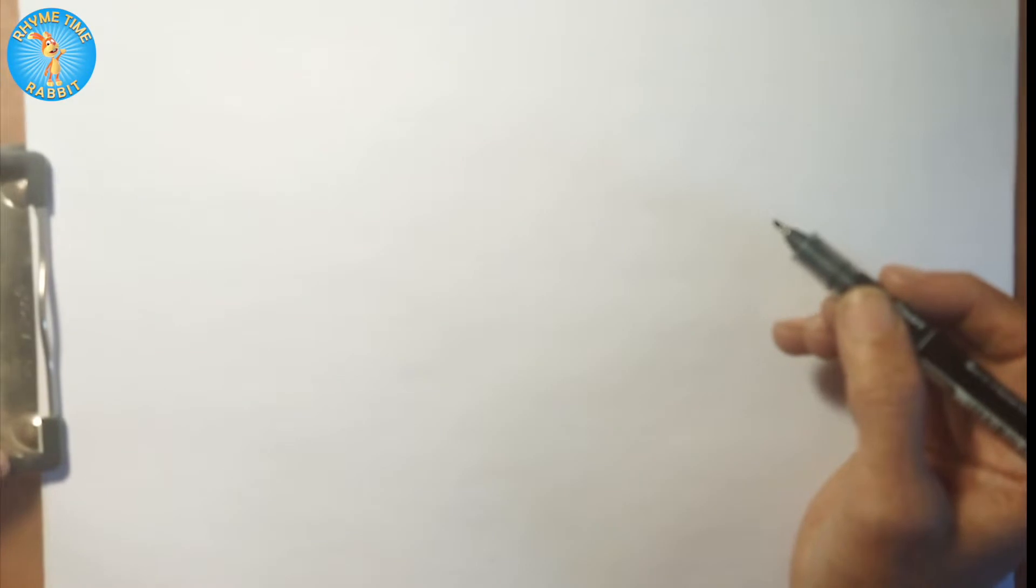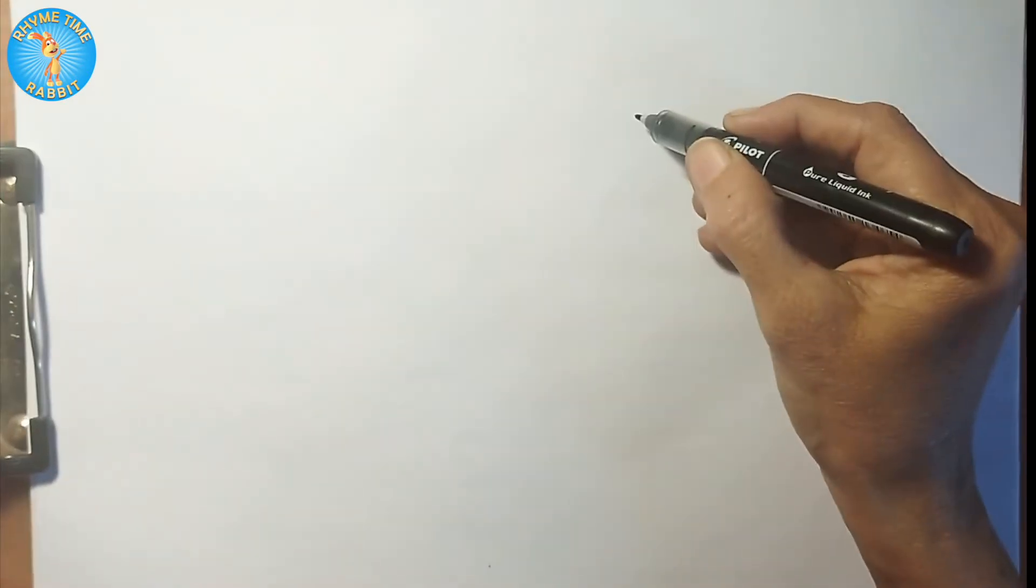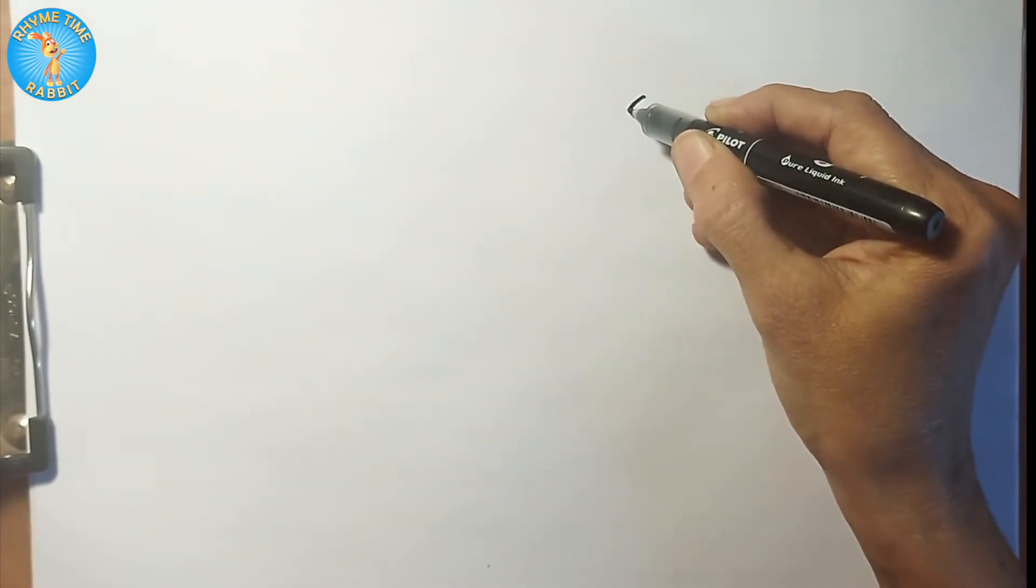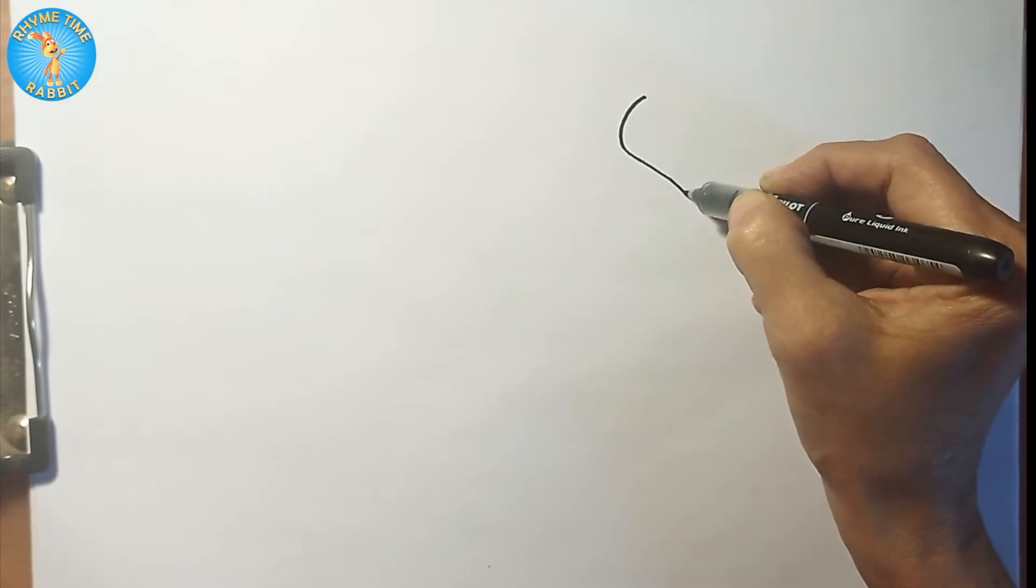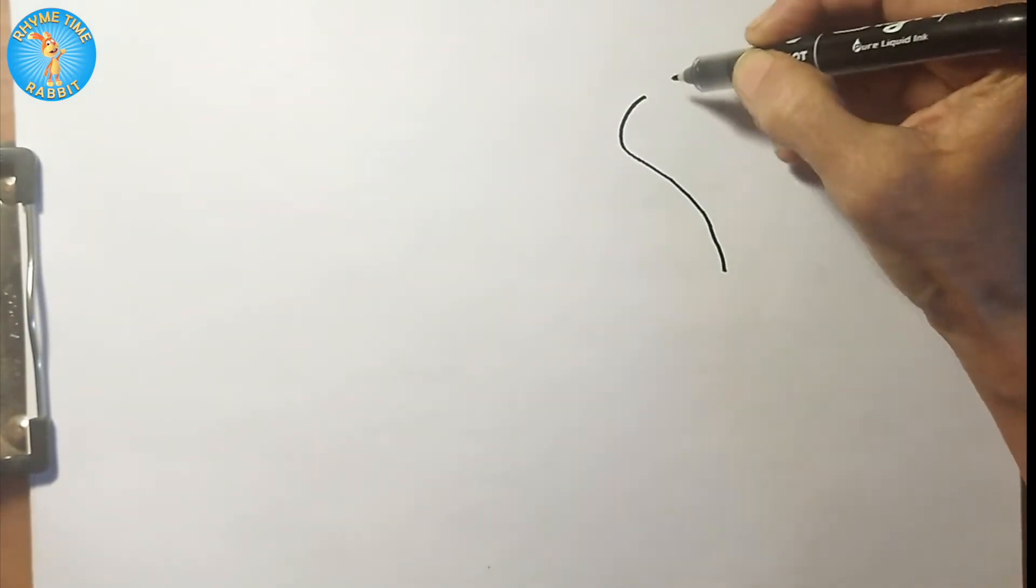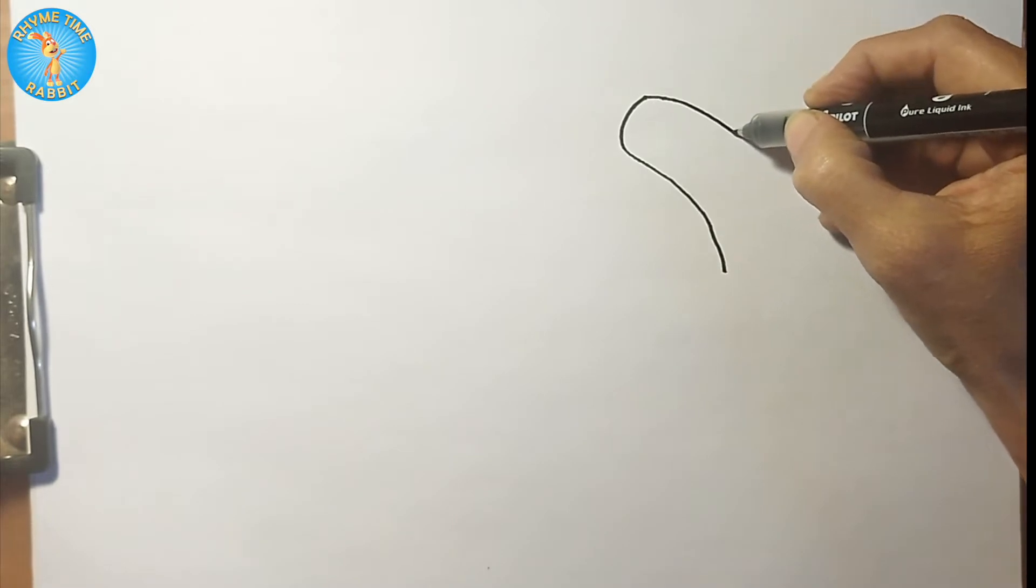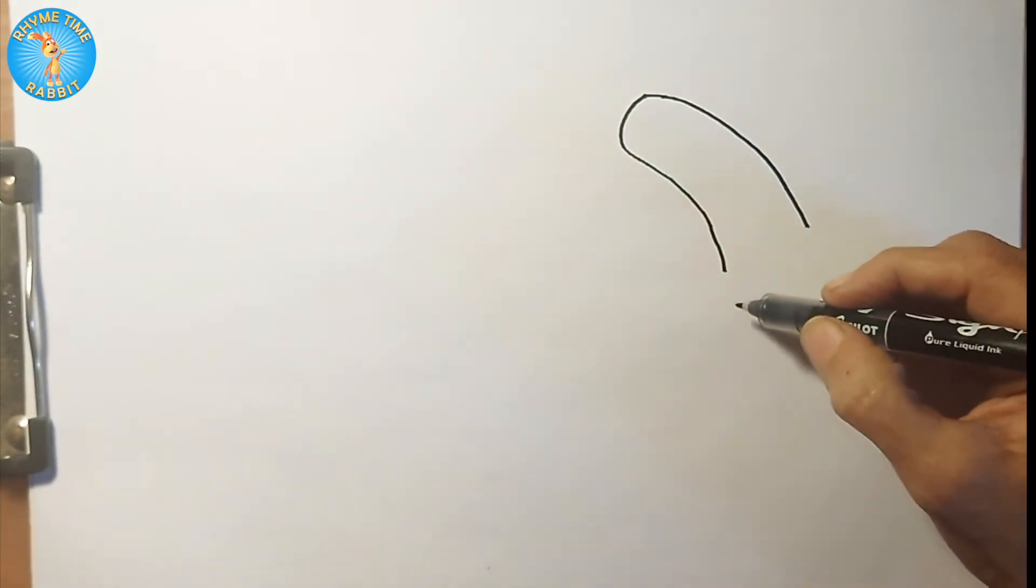We'll start with the rooster. Let's first make the basic outline because that's most important - you have to get the correct shape. Just this shape to start with. The rooster has a long neck, okay, and now...